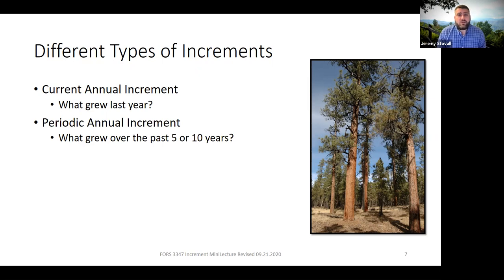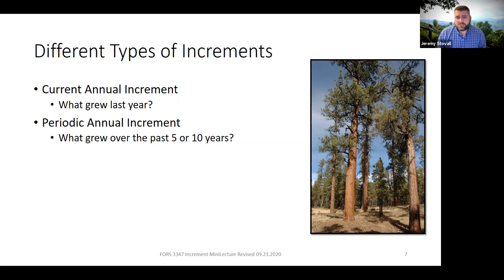Another option is periodic annual increment, which is just a rolling average. In any given year, what was the average growth over the last five or ten years? You can pick the term depending on what you need. This has many of the same pros and cons as current annual increment, but one added advantage: if you had odd weather or a harvest operation in the last year, it averages that out with several other more representative years.